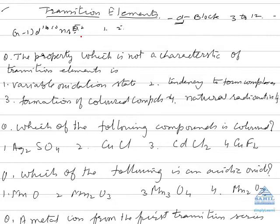They show paramagnetic behavior. Paramagnetism is a characteristic of unpaired electrons. Since the majority of these elements have unpaired electrons, they show paramagnetic behavior.